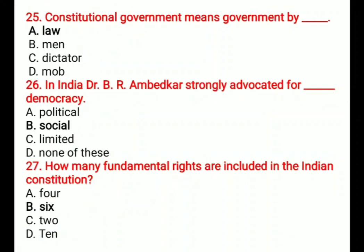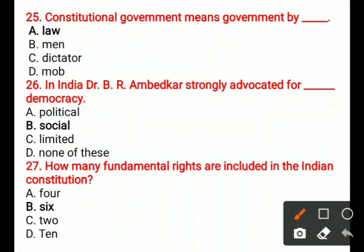Question 25: Constitutional government means government by — A) Law, B) Man, C) Dictator, D) Mob. The correct answer is A, Law. Constitutional government means government by law.